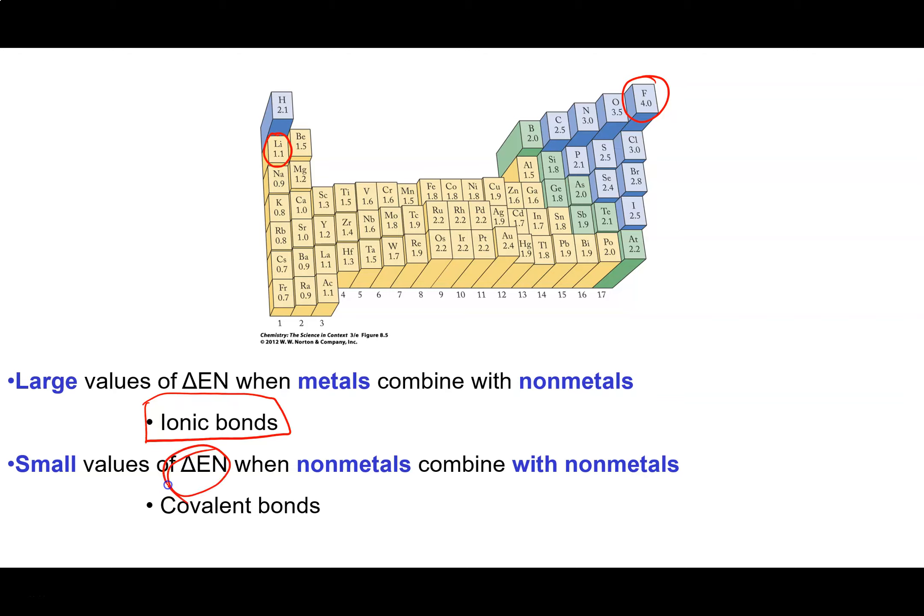When we have small differences in electronegativity like between the non-metals themselves, then what we get is covalent bonds. We don't transfer electrons from one atom to another. Those two atoms will be sharing the electrons.